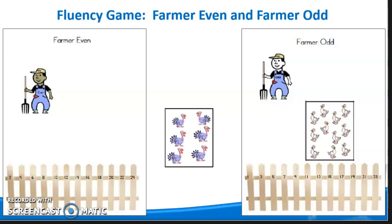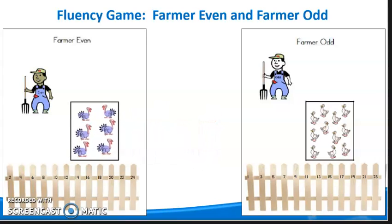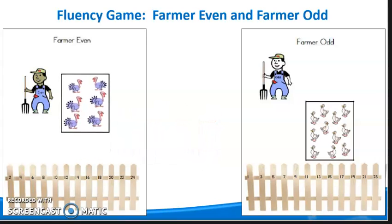The second card shows 6 turkeys. Since the turkeys can all be paired up evenly, this card goes to Farmer Even, showing that 6 is an even number.